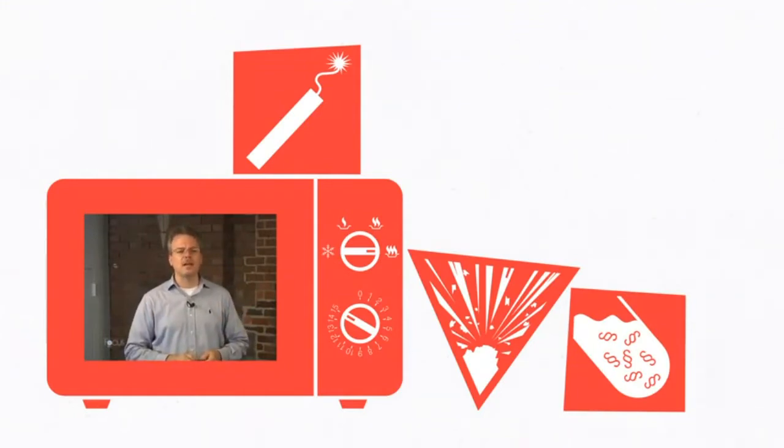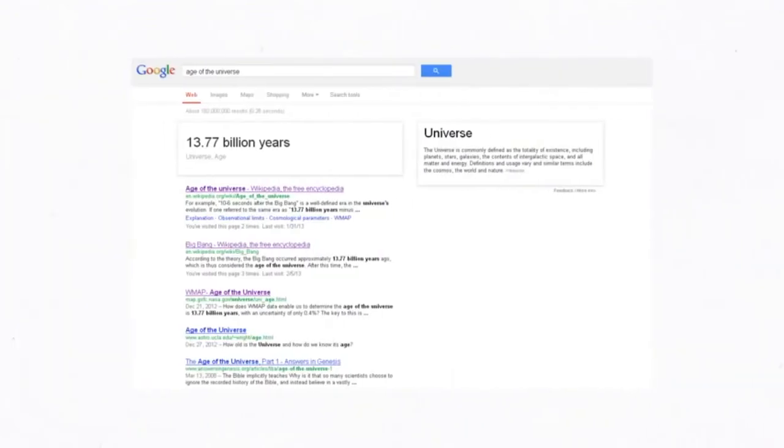You even get the time scale wrong. It wasn't a slip of the tongue either, since the 18 to 20 billion year figure came up twice. In the age of Google, it takes about two seconds to find that the universe is 13.772 plus or minus 0.059 billion years old. I guess this goes a long way to demonstrate how much effort you put into researching the subject you deem yourself fit to preach about.